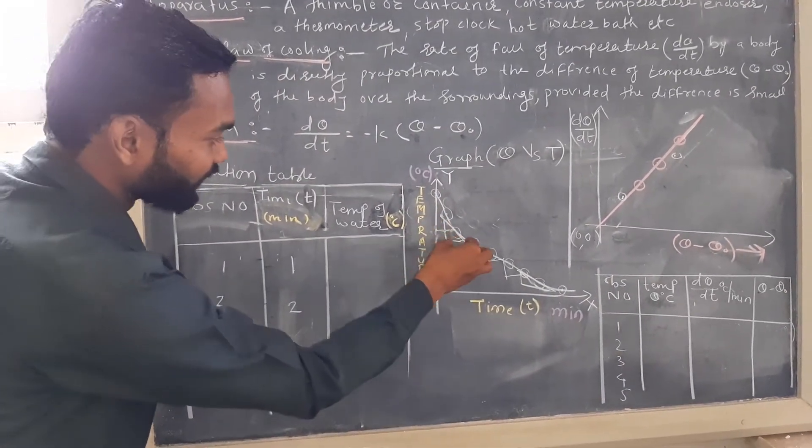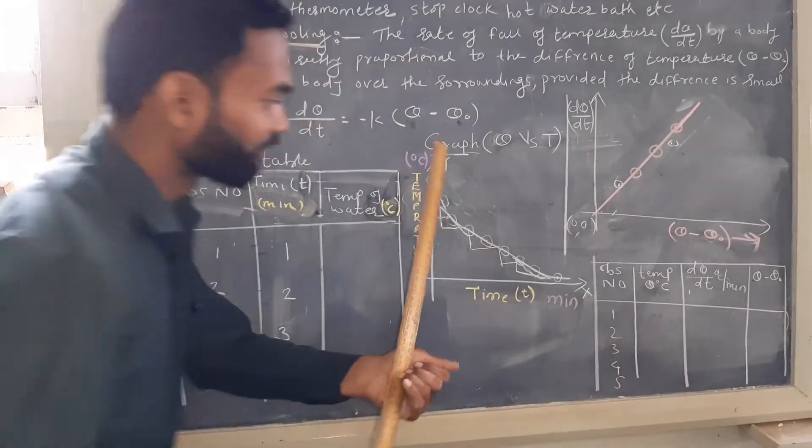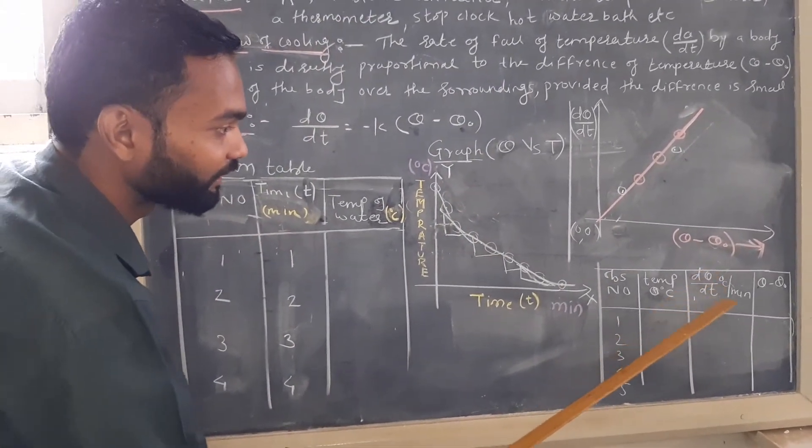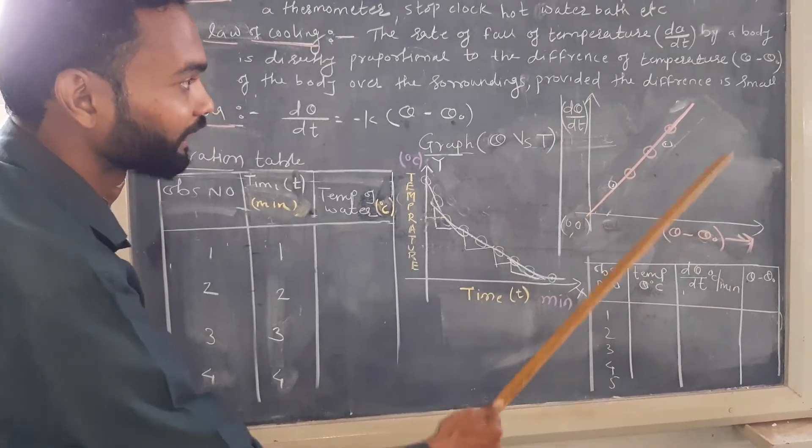And this is nothing but the dθ upon dt. So by using temperature θ degree Celsius or dθ/dt we need to plot another graph.